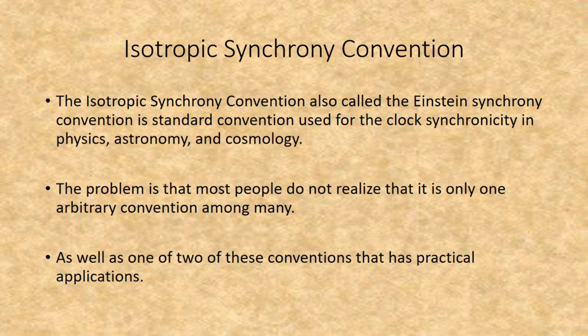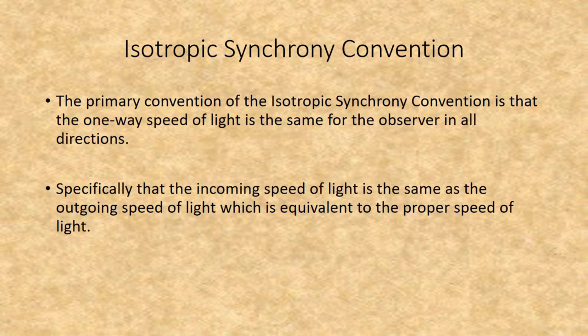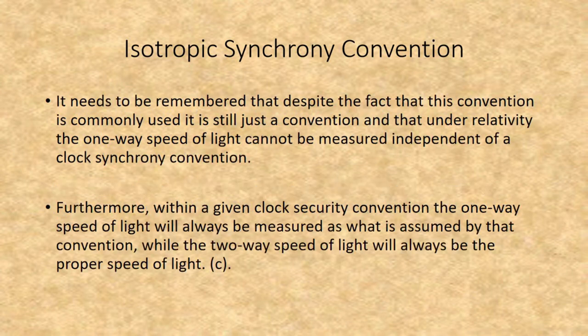The isotropic synchrony convention, also called the Einstein synchrony convention, is the standard convention used in physics, astronomy, and cosmology. The problem is that most people do not realize it is only one arbitrary convention among many. The primary convention of the isotropic synchrony convention is that the one-way speed of light is the same for the observer in all directions — specifically, that the incoming speed equals the outgoing speed, which equals the proper speed of light. It needs to be remembered that despite its common use, it is still just a convention, and under relativity, the one-way speed of light cannot be measured independent of a clock synchrony convention. Within a given convention, the one-way speed of light will always be measured as assumed by that convention, while the two-way speed will always be c.